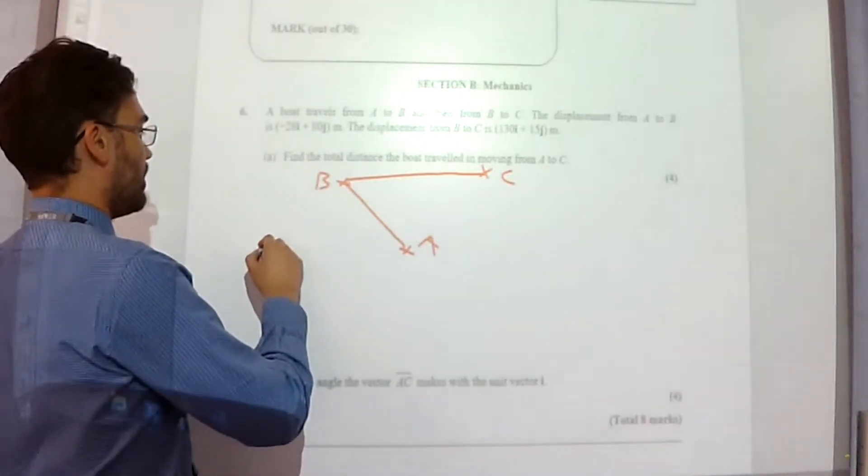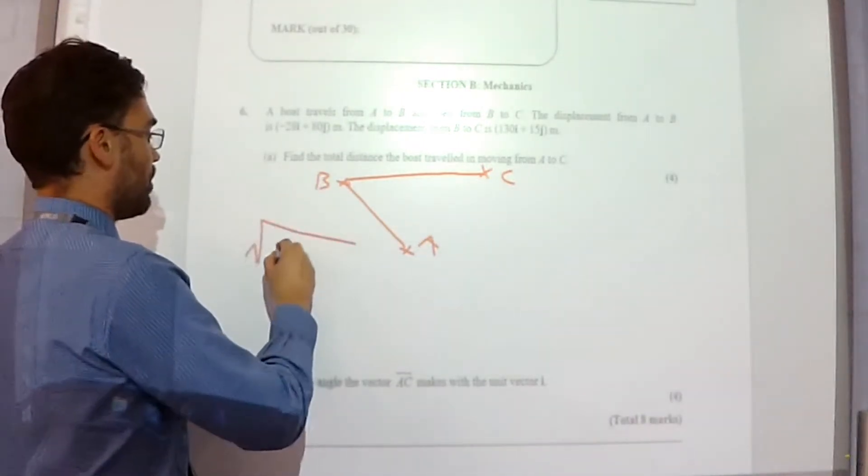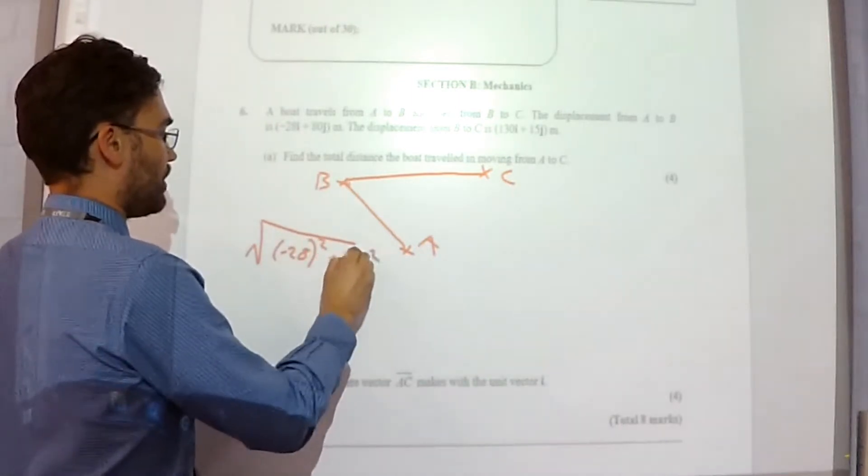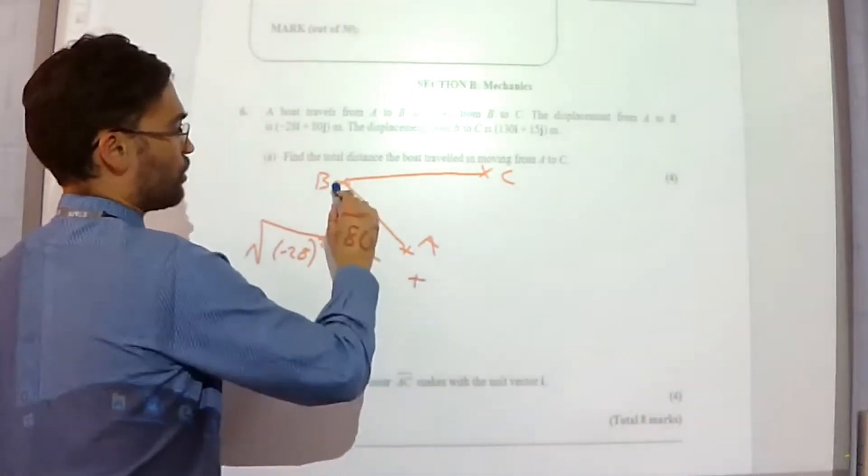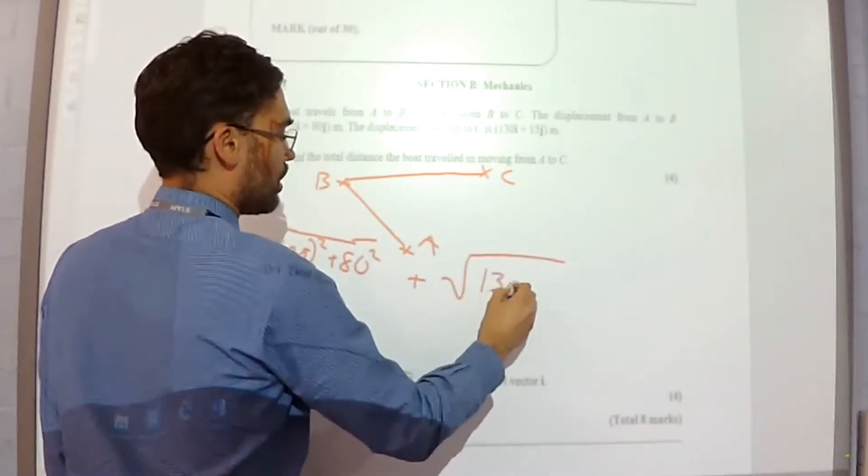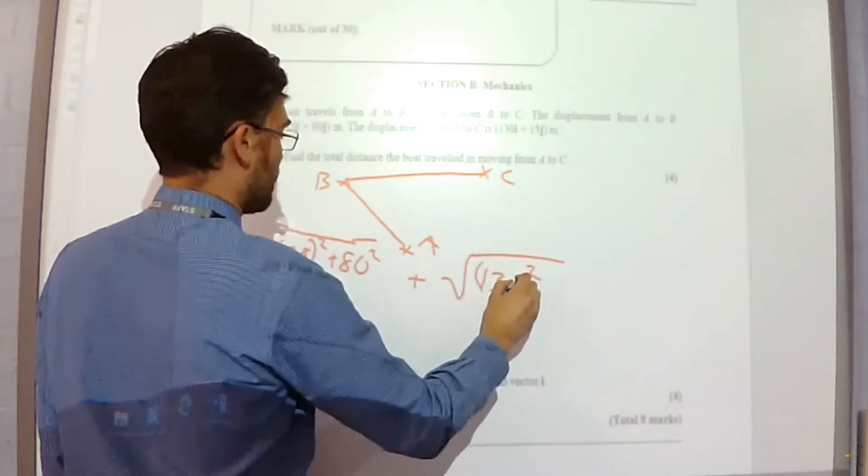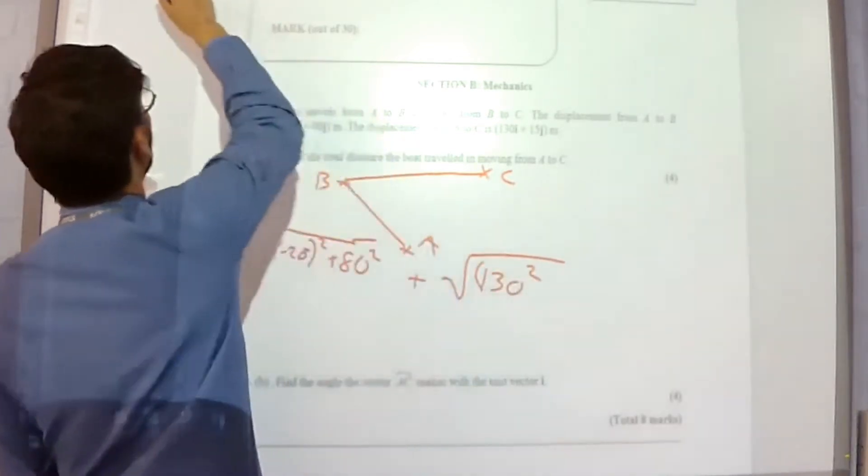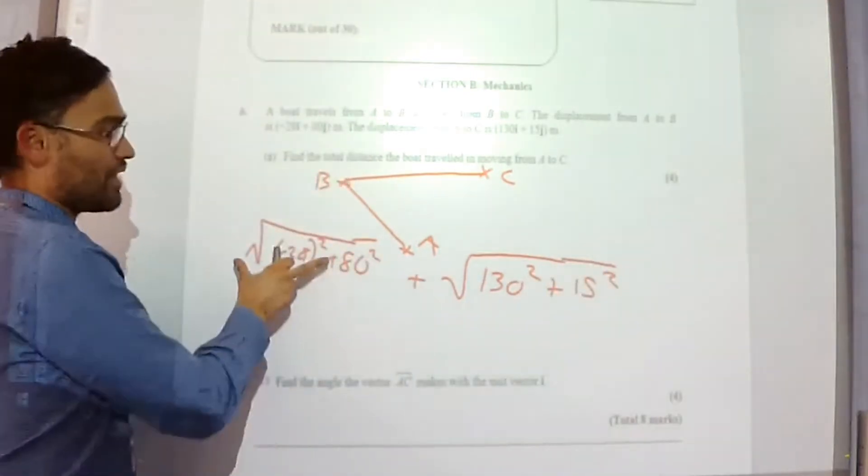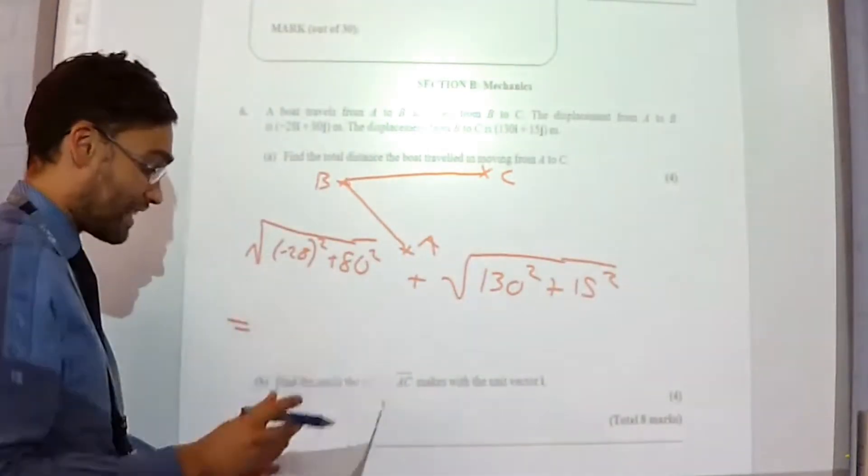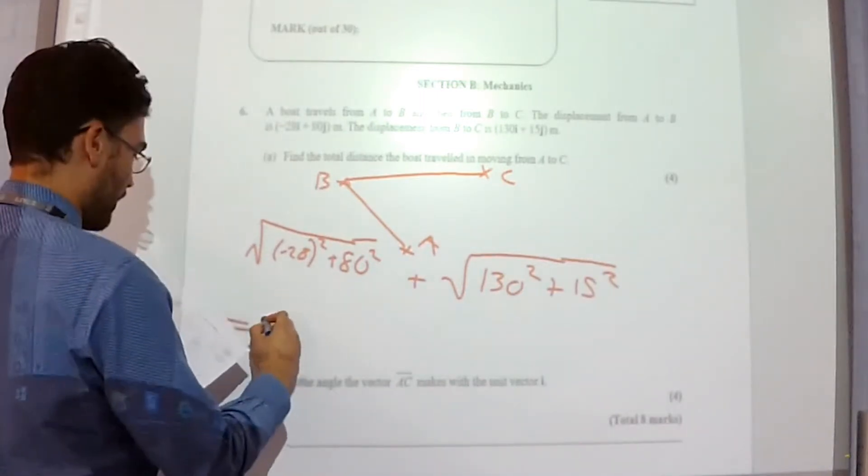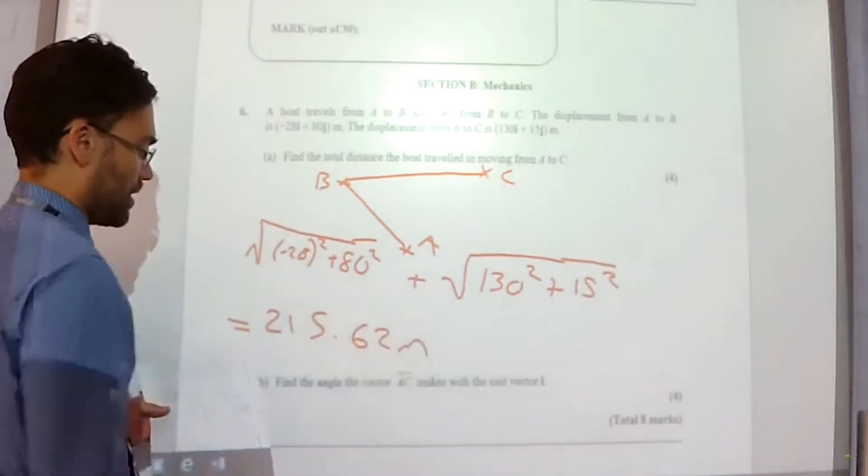So A to B is square root of negative 28 squared plus 80 squared. And if I add that to this distance which is the square root of 130 squared plus 15 squared. This gives me those two distances added together gives me 251.62 meters.